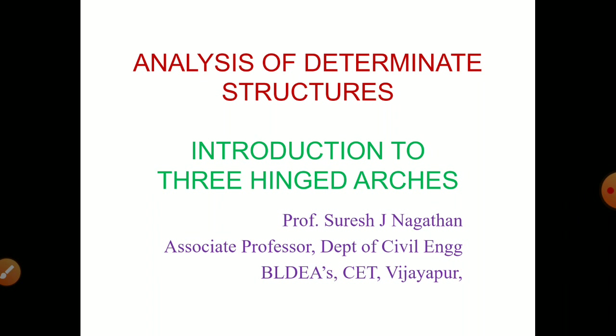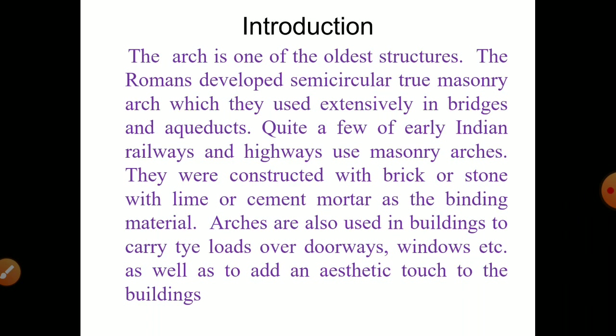They are determinate structures. The arch is one of the oldest structures. Romans developed semi-circular true masonry arches, which they used extensively in bridges and aqueducts. Quite a few earlier Indian railways and highways use masonry arches. They were constructed with brick or stone with lime or cement mortar as the building material.